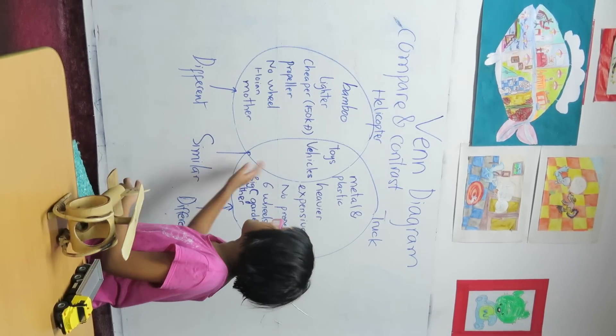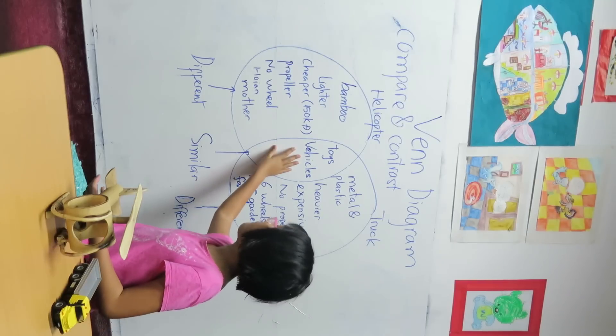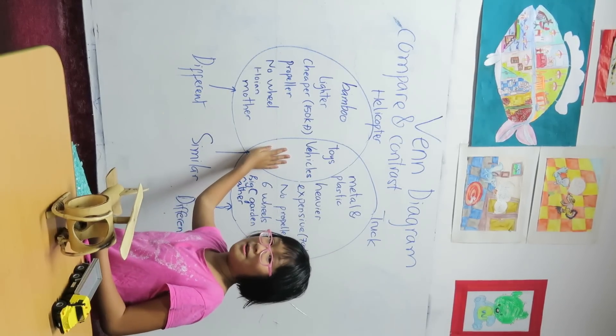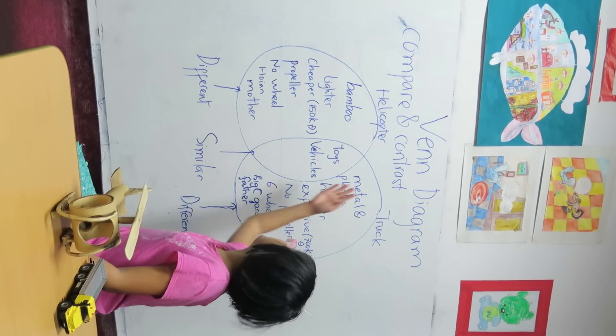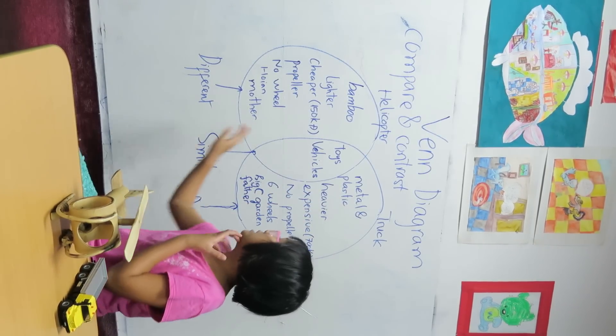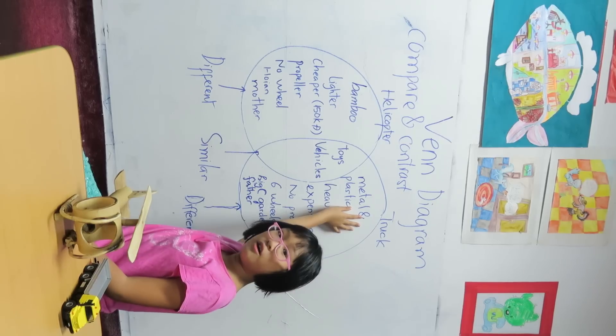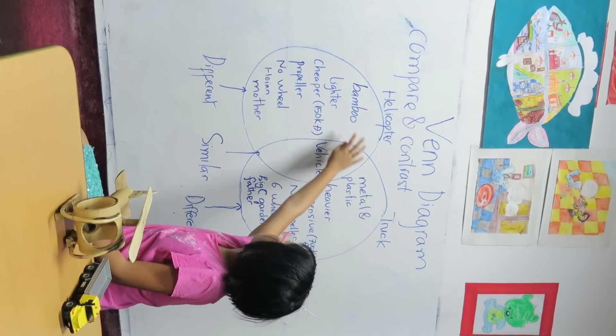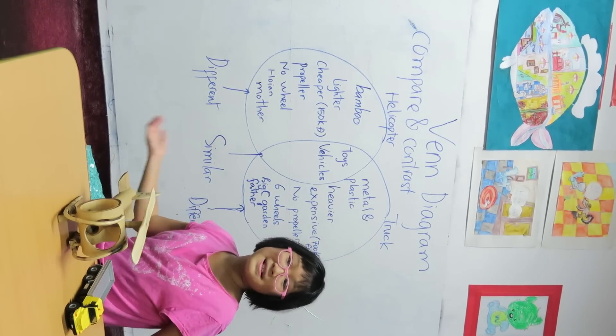I make sure that the circles overlap each other in some parts. The overlapping part will list the similarities between the helicopter and the truck. The rest of the helicopter's and the truck circle, which means these two parts, is to list their differences respectively.